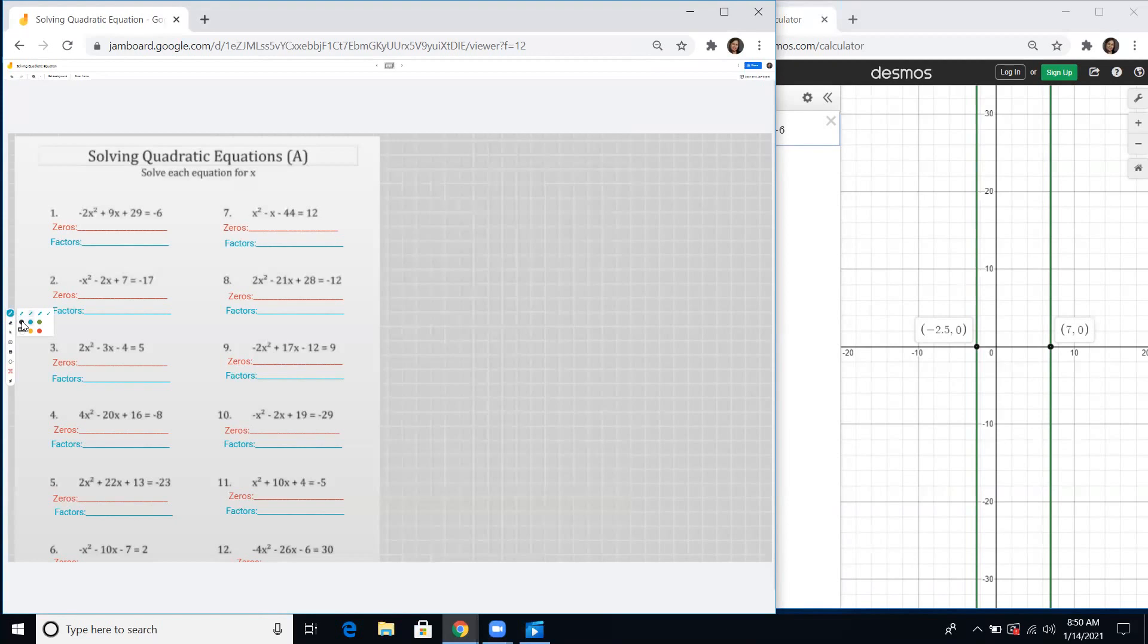Let us write them. We have the first value of x, so x equals negative 2.5, and also x equals 7. Those are the x-values. Don't forget the negative. These are the zeros.